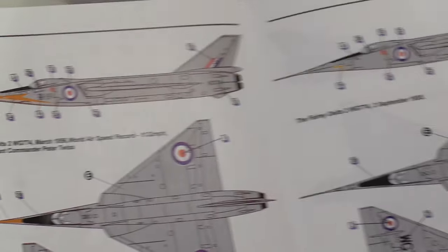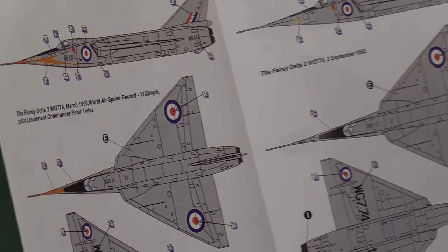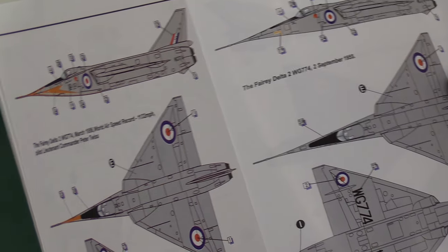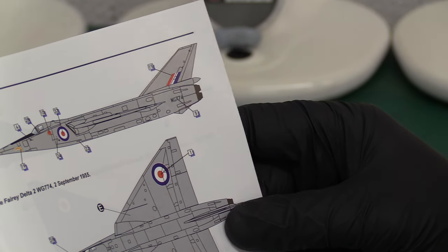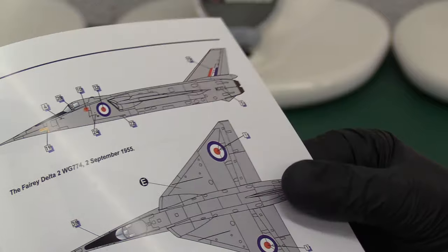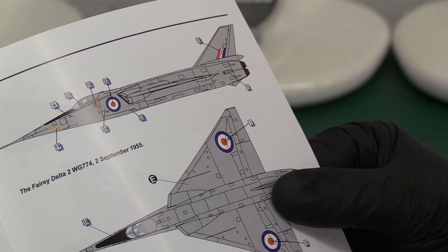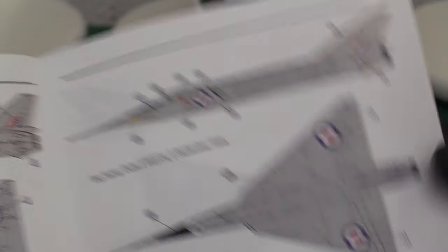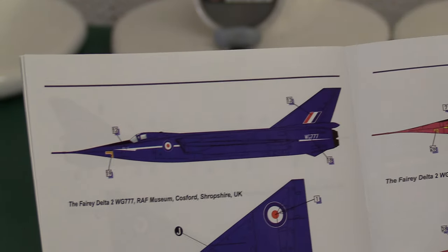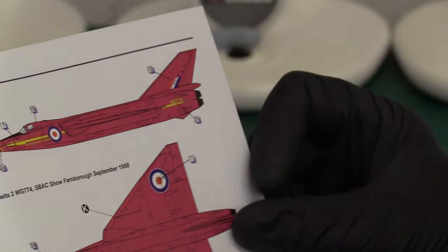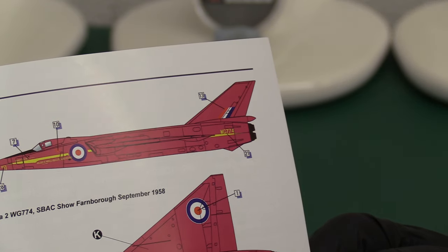Then you've got all your doors and your gear going in, and then finally color call out. So we've got the record breaker flown by Peter Twist, March 1956, and then we've got 1955, 1956. That's the earlier variant of it. The interesting colored ones, we got the one that's at Cosford, the purple one that's at Cosford, and the one that's at Farnborough from 1958.